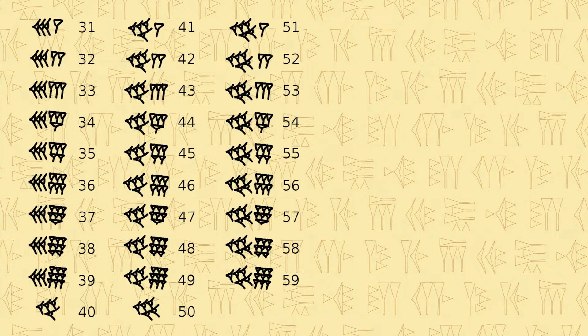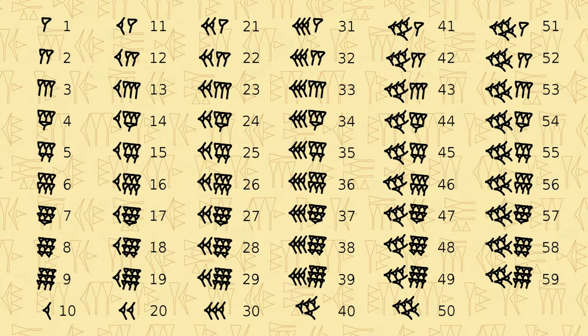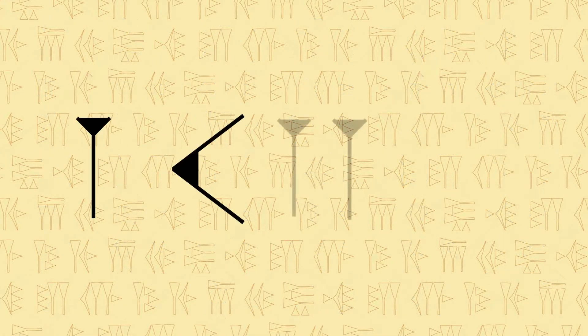For numbers in between, scribes would just use multiple vertical wedges. For numbers between 10 and 59, they would use both the corner and vertical wedges. The number 60 resembled a 1 and was placed to the left in the sexagesimal position.